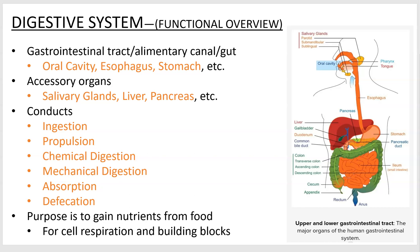Your gastrointestinal tract — you may also hear it called the alimentary canal or gut — is basically a tube that starts at one end and empties at the other. A lot of animals have this kind of one-way flow-through digestive system. We have a lot of other organs associated with it, but really it's just a tube with a couple of things attached.